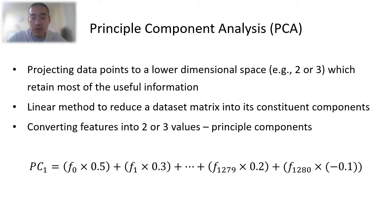First, let's talk about PCA, Principal Component Analysis. So PCA is a linear method to reduce the features from high-dimensional space to a lower-dimensional space, for example, to 2D or 3D. And at the same time, retain all of the information.